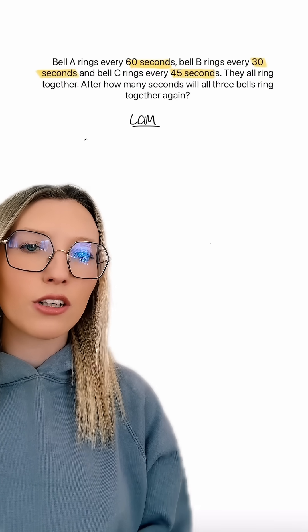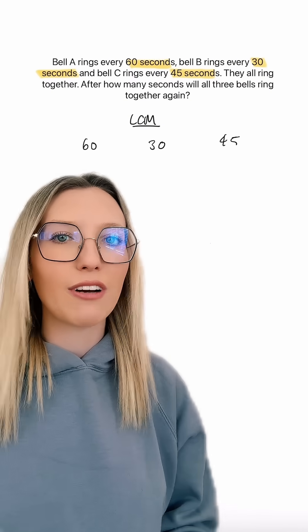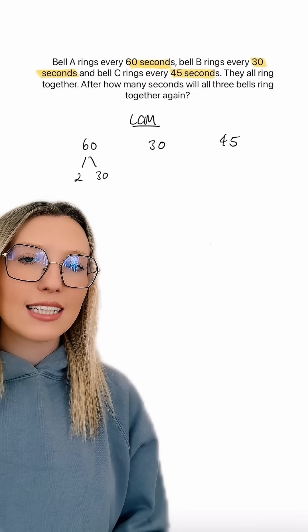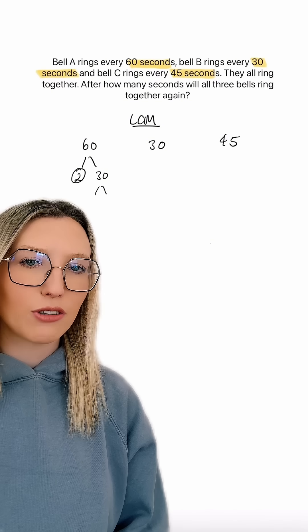Now these questions are just about finding the lowest common multiple of the three values we've been given. So we've got a 60, a 30, and a 45. So let's go ahead and find our prime factorization trees.